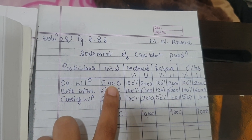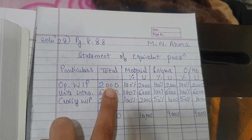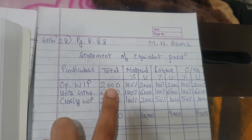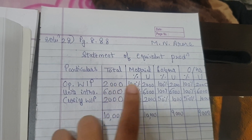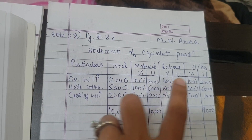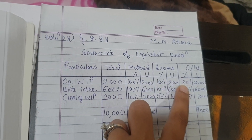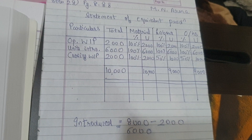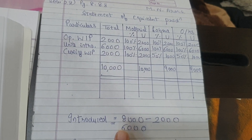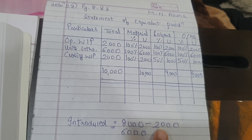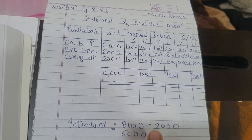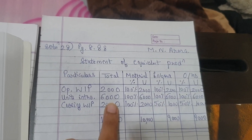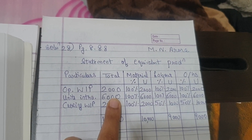Here also I have done the same - I was given 2000 units; I ignored the stage of completion because I am doing average cost method, and I took hundred percent in all three. Units introduced are 8,000 - but closing WIP will be deducted from that, so finally the units are 6,000.